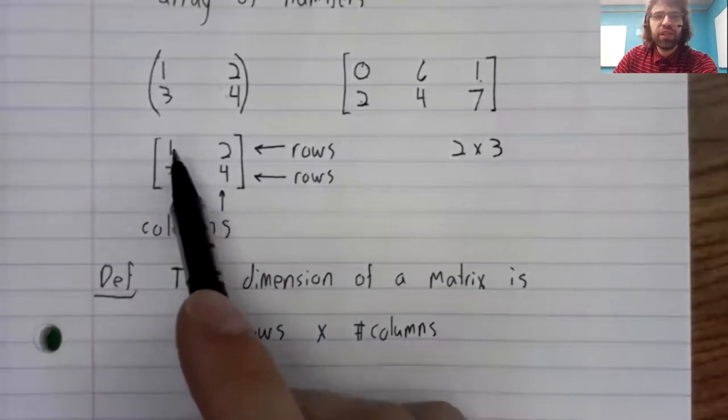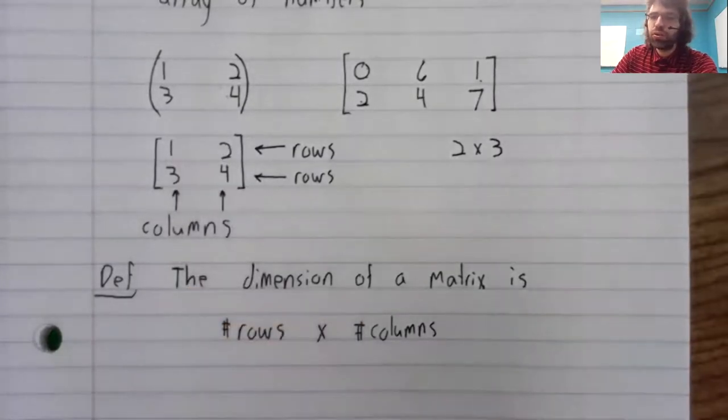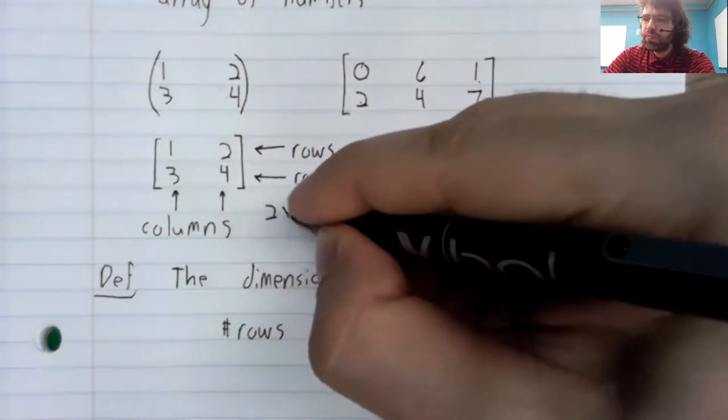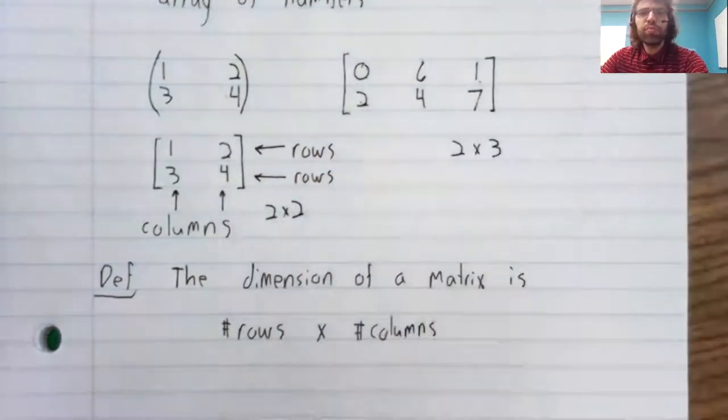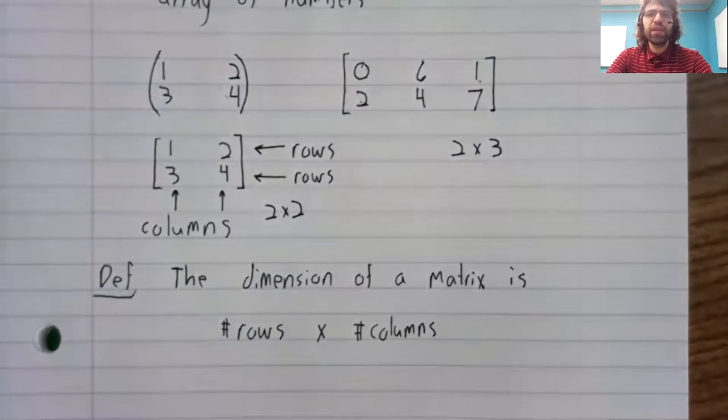This matrix has two rows and two columns. It's a two by two matrix.